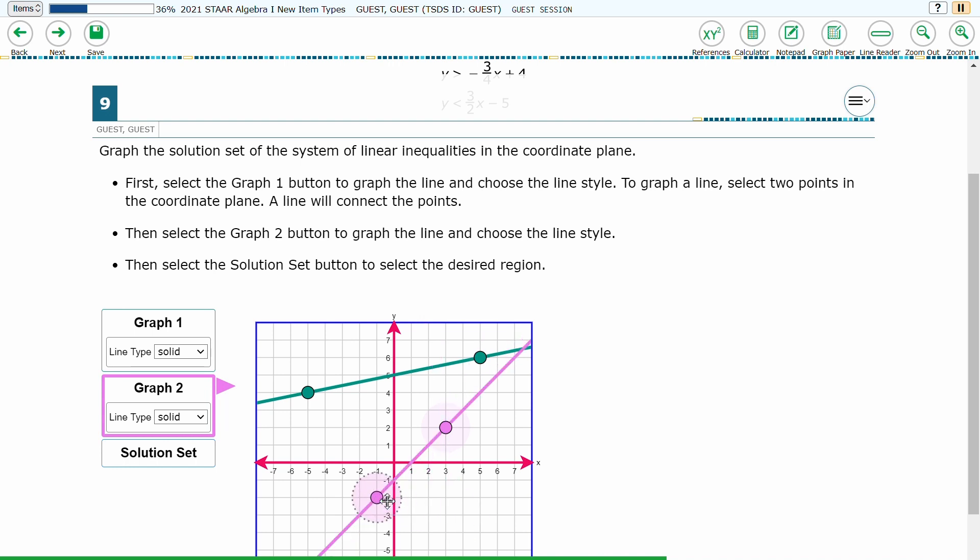The student can only work with the points for the graph that is currently highlighted. The student can click and drag the points to various places on the coordinate plane or click a point to remove it and click in a new location to replace it.